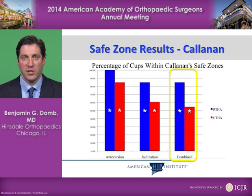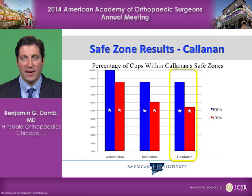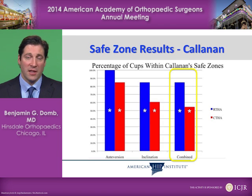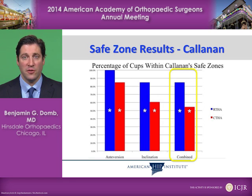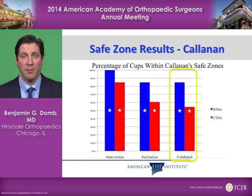For Kalanand's safe zone, which is a tighter safe zone, we go from 55% with the freehand technique to 85% with the robotic technique. That means we've cut the number of components outside of the safe zone from 45% to 15% — a three-fold reduction in the number of components placed outside of Kalanand's safe zone.